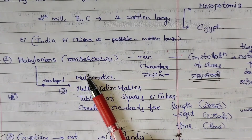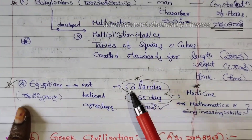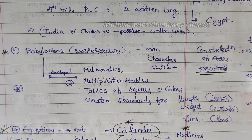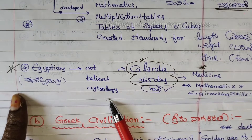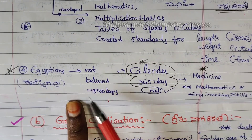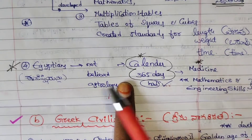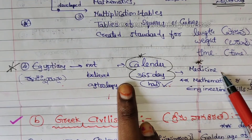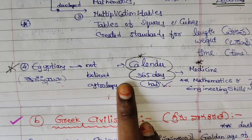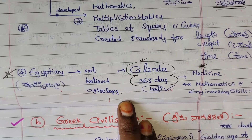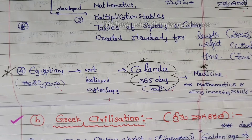The next point is that Egypt did not believe in astrology, unlike the Babylonians. Mathematics and engineering skills were very important in Egypt. This concludes the early science period.